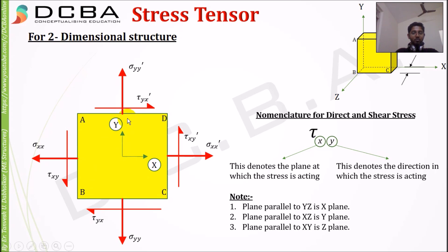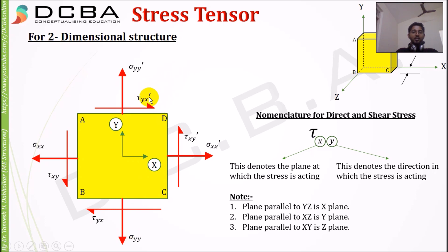Since Y is vertical and tau_xy is acting vertically, the second letter is Y. For tau_yx: AD is the Y plane, BC is the Y plane, hence the first letter is Y. Since it is acting along the X direction, the second letter is X. The variation — why tau_yx dash or sigma_yy dash have different denotations from tau_yx or sigma_yy — will be explained in my next video.